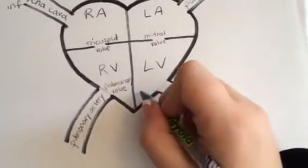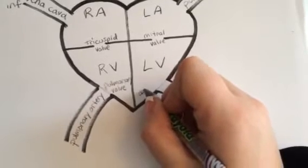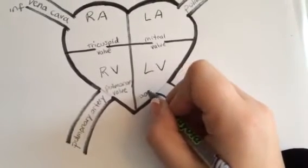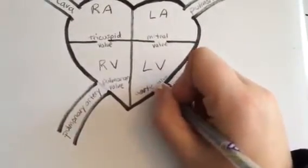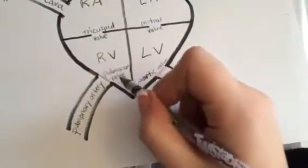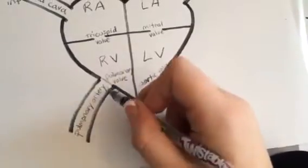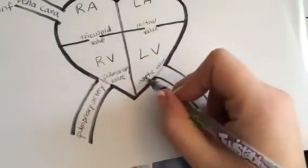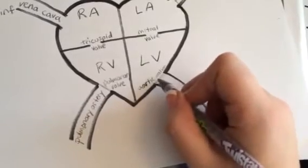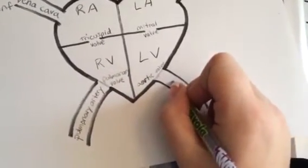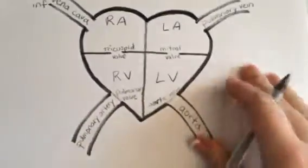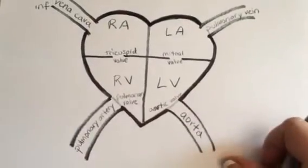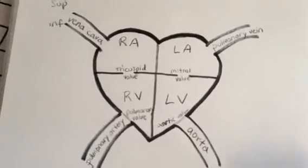From the left ventricle, blood must pass through another valve — the aortic valve. Just as blood passed through the pulmonary valve into the pulmonary artery, here it goes through the aortic valve into the aorta, leaving the heart and going out to the rest of the body.